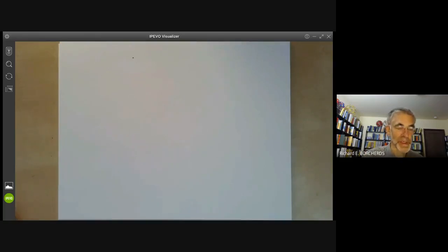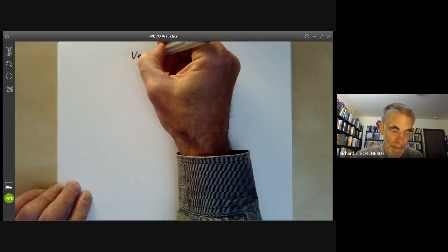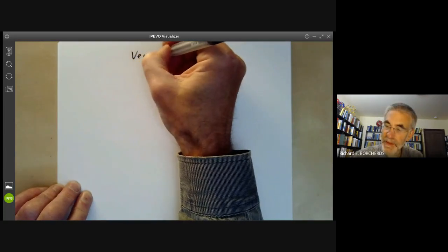This algebraic geometry lecture will describe two examples of projective varieties: the Veronese surface in P5 and the variety of all lines in space. We start with the Veronese surface.